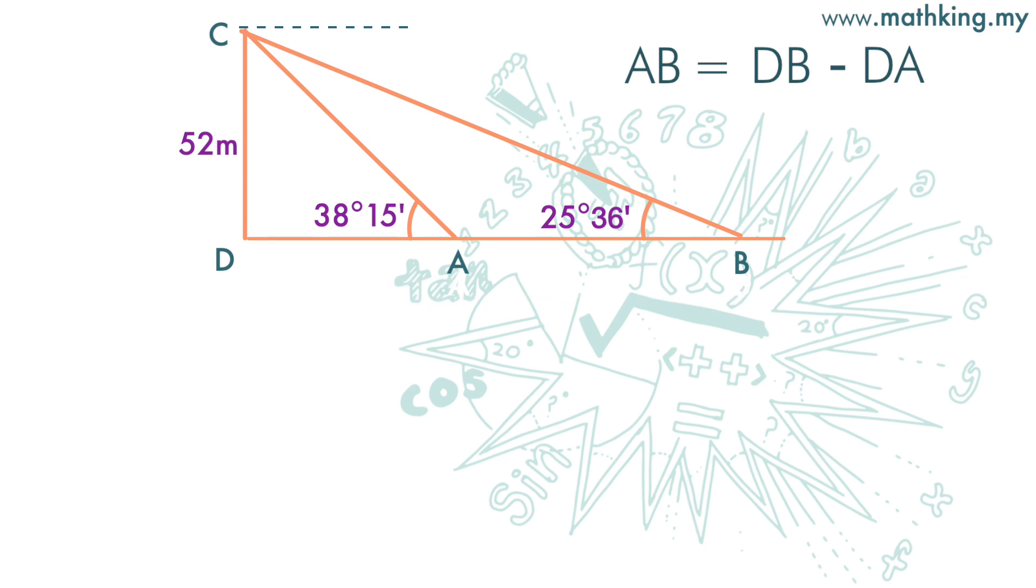Let's first find the value of DA. The opposite of 38 degrees 15 minutes is 52 meters. DA is the adjacent. In such a case, we are going to use tangent because tangent is opposite over adjacent. We plug in the numbers: tangent 38 degrees 15 minutes equals 52 over DA.